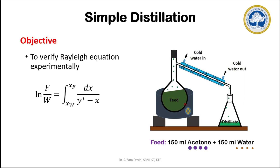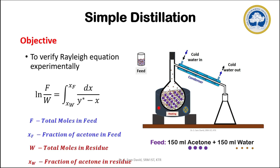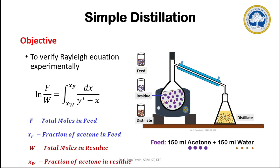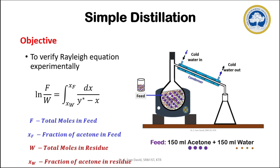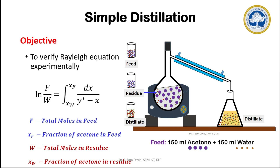We can continue the process until a specific volume of distillate is collected. Once the distillation process is stopped, the remaining solution in the round bottom flask is called as residue, and the condensate collected in the separate flask is called as distillate. The total moles in the feed mixture is termed as F, and the total moles in the residue is termed as W. XF and XW will be the mole fraction of acetone in the feed and the residue. At the end of the experiment, we will be left with three solutions: the feed mixture, the residue, and the distillate.